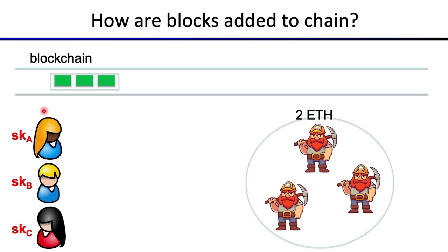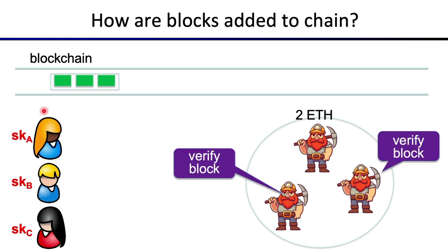On Ethereum, the block reward would be, for example, two ethers given to the miner for creating the block. You can imagine everybody wants to be elected as the leader because every time they're elected they get paid. One issue with building consensus is how do we make sure the leader election mechanism cannot be subverted? Once we have a block, all the other miners look at it and verify that it's valid. If the block turns out to be invalid, it's simply discarded as if it was never posted to the chain.